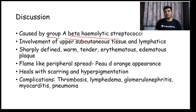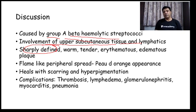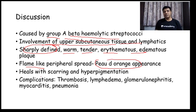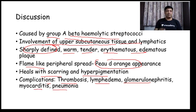In erysipelas there will be involvement of the upper subcutaneous tissue and lymphatics. It is clinically seen as sharply defined — that is in comparison to cellulitis. The lesions of erysipelas are sharply defined, warm, tender, erythematous, edematous plaques with flame-like peripheral spread and a peau d'orange appearance. It heals with scarring and hyperpigmentation, and complications include thrombosis, lymphedema, glomerulonephritis, myocarditis, and pneumonia.